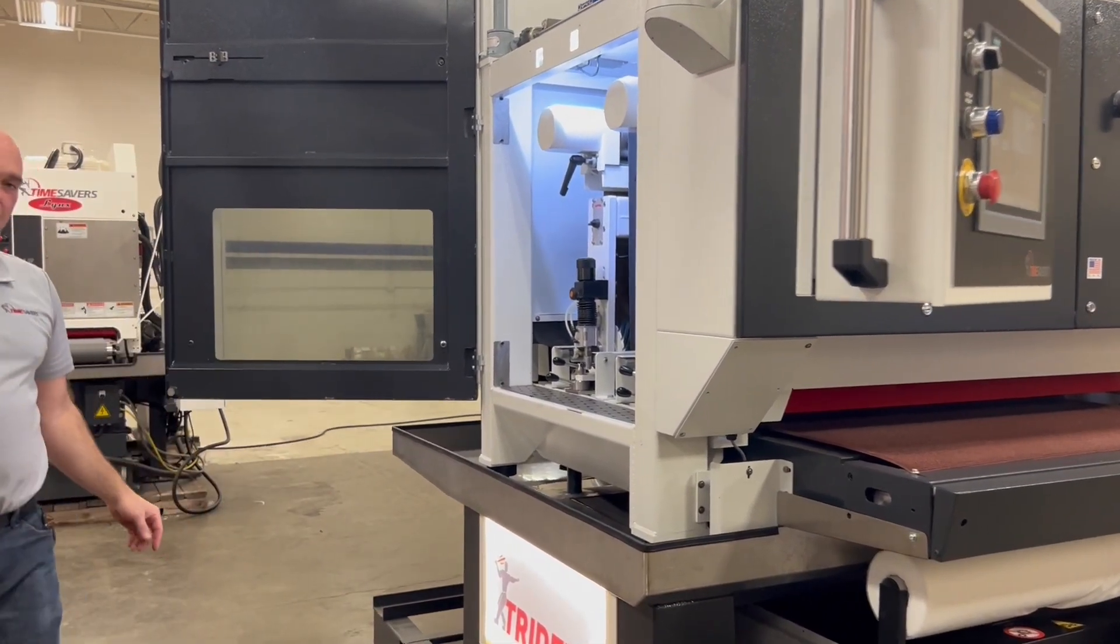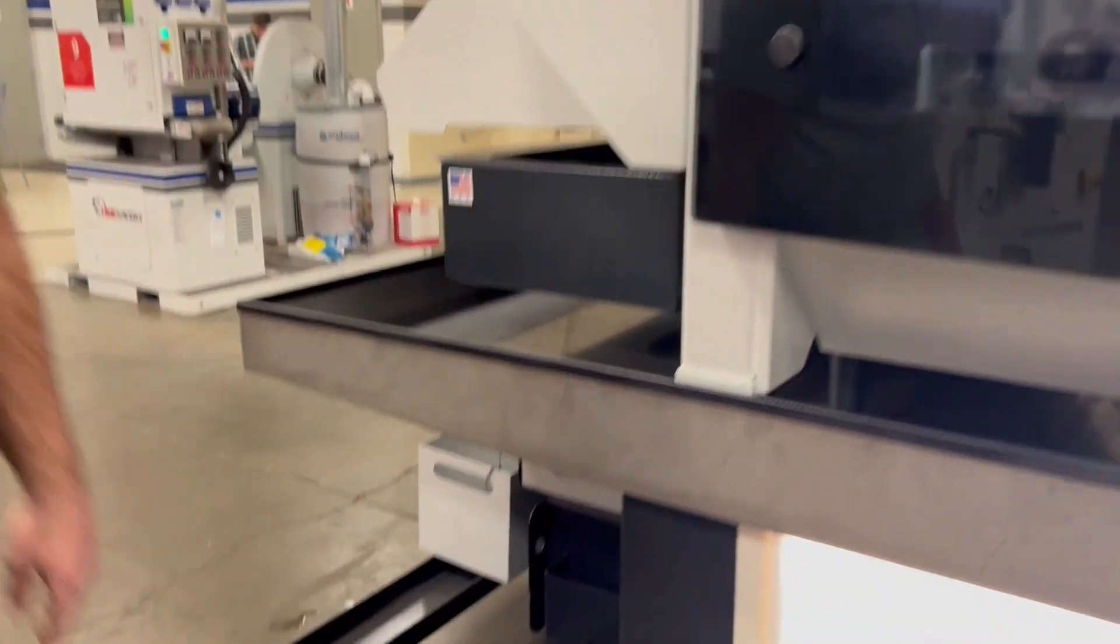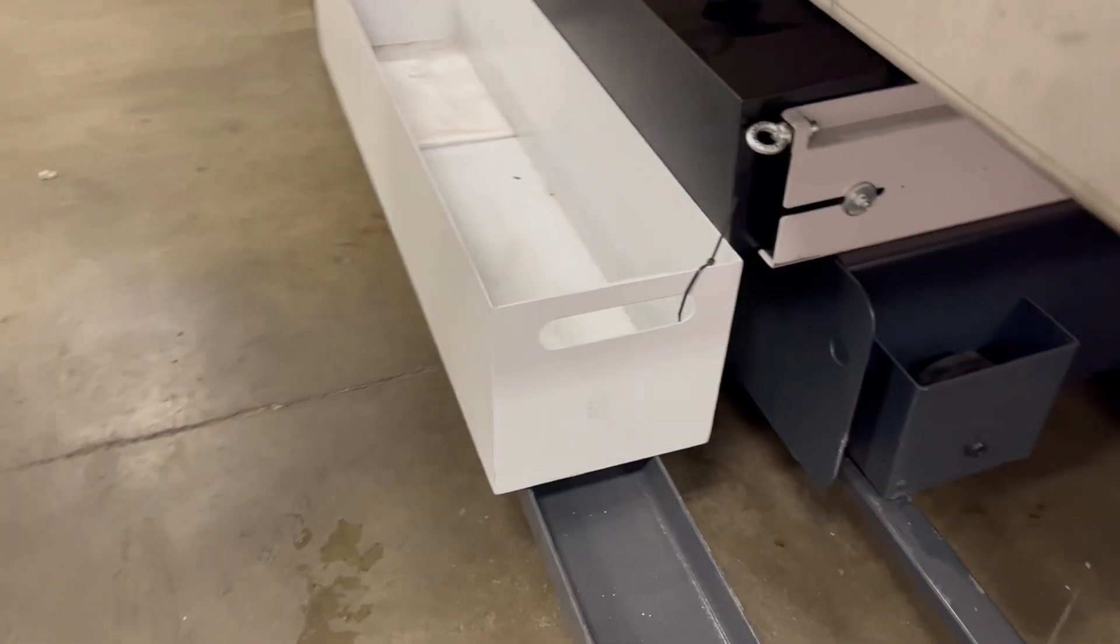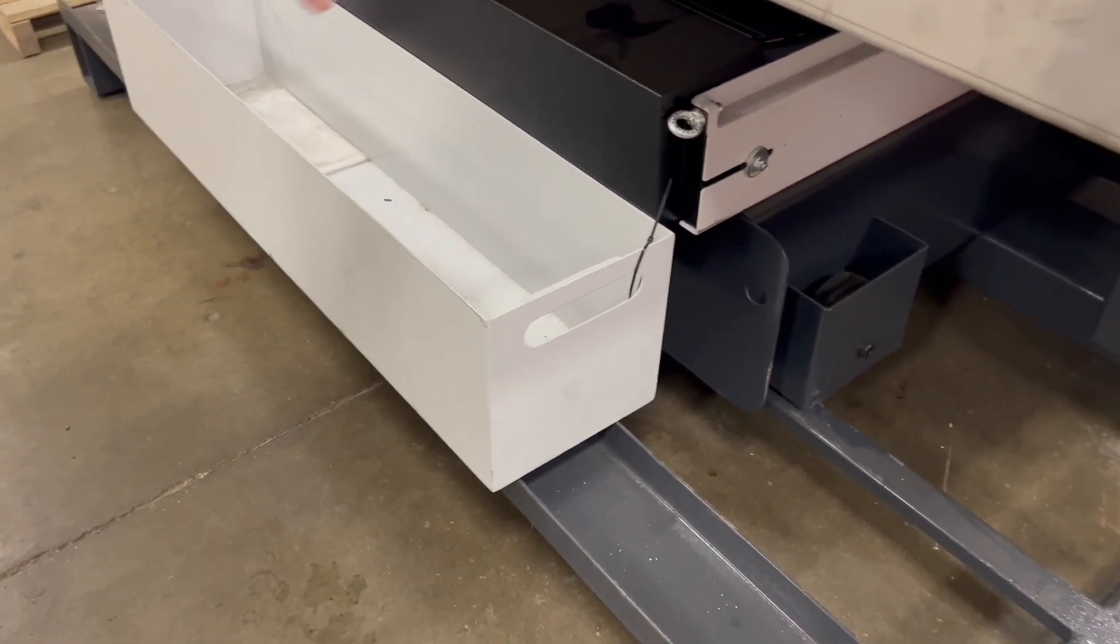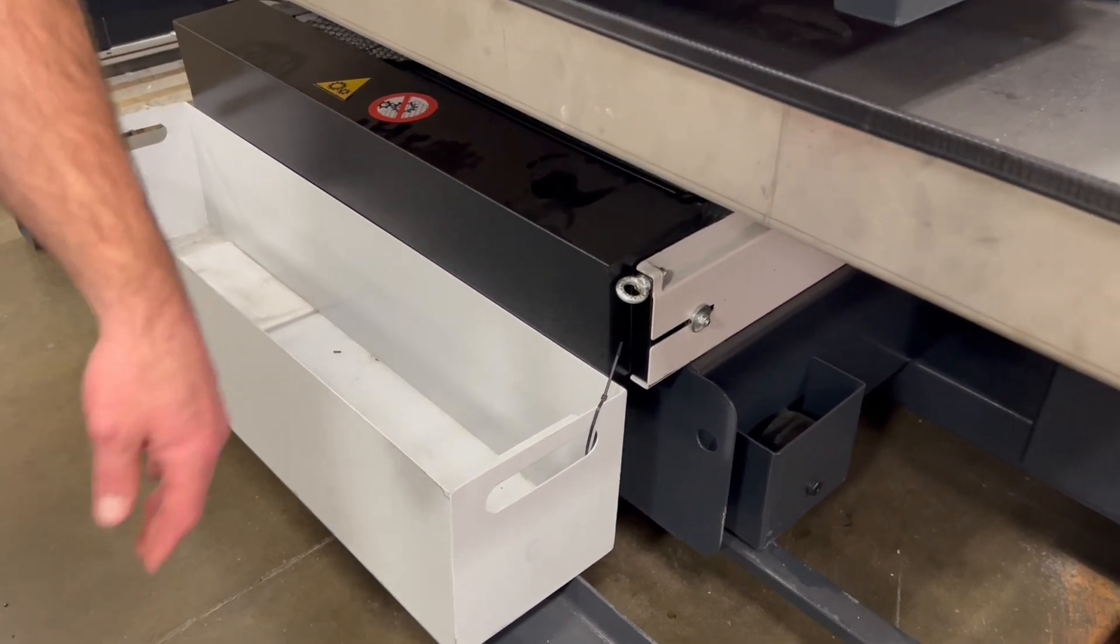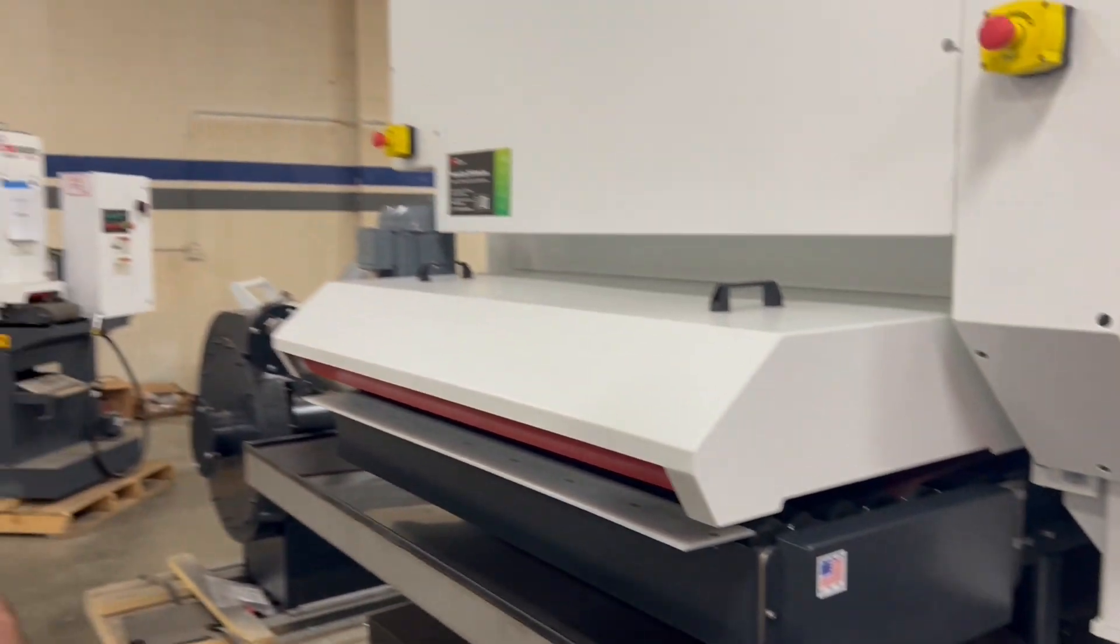On the back side here when the filter paper becomes loaded with swarf there is a float switch on here so it can automatically advance the filtration paper and then dump it into this container here for disposal. We also do have a manual jog feed for the filter paper also.